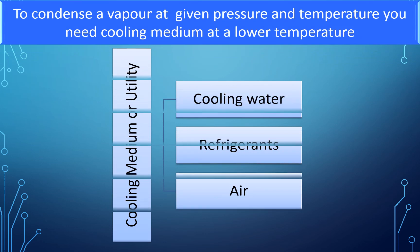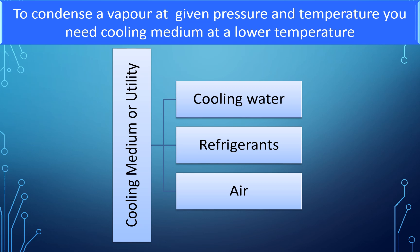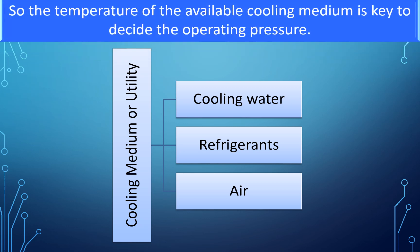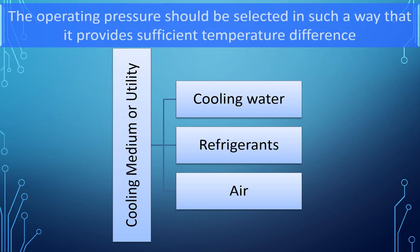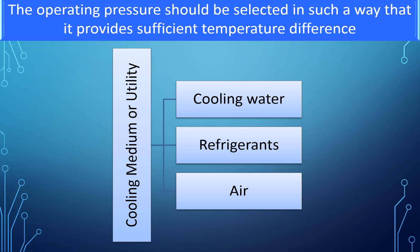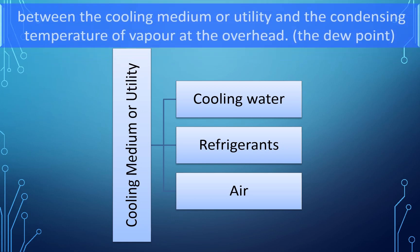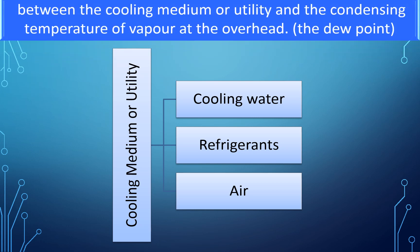To condense vapor at a given pressure and temperature, you need a cooling medium at a lower temperature. So the temperature of the available cooling medium is key to deciding the operating pressure. The operating pressure should be selected such that it provides sufficient temperature difference between the cooling medium and the condensing temperature of the vapor at the overhead — that is the dew point.